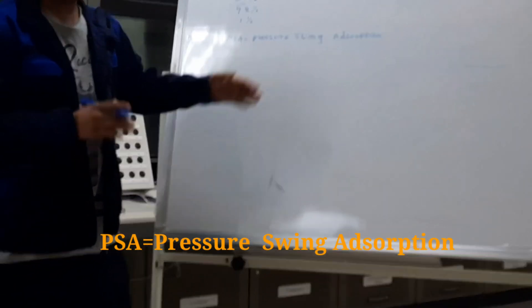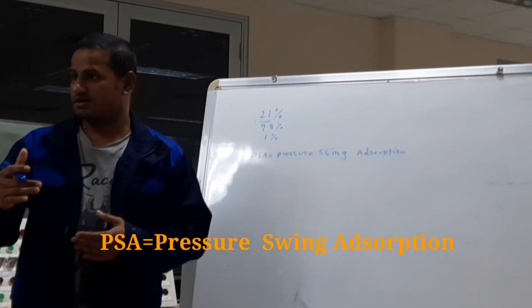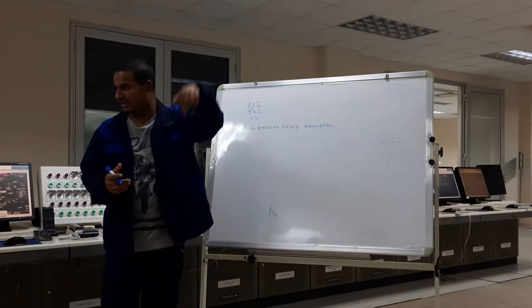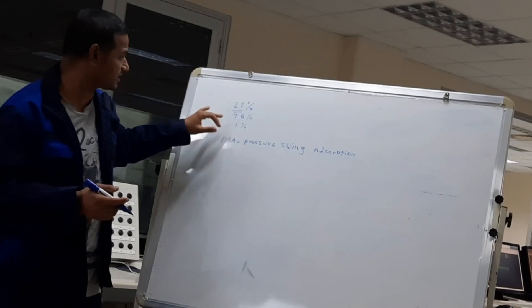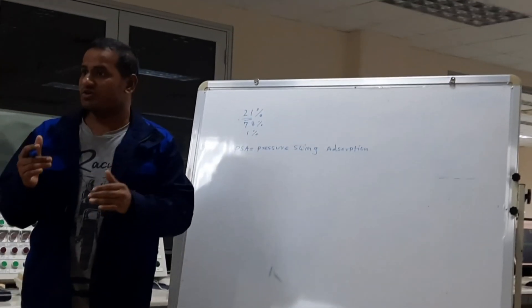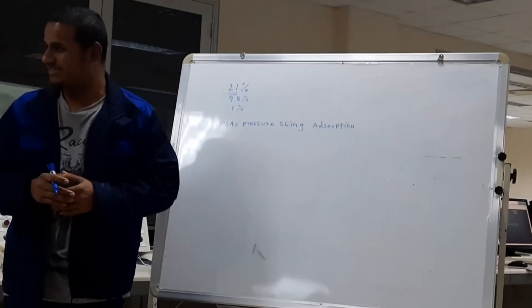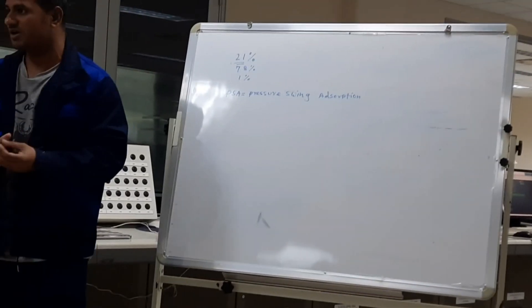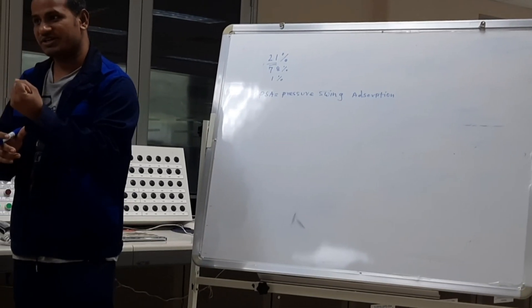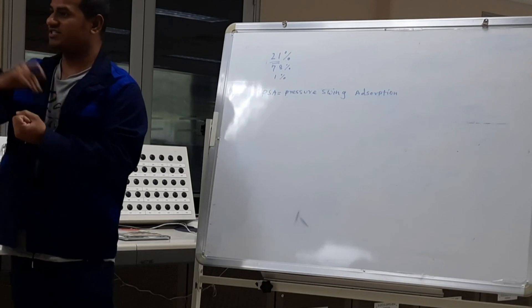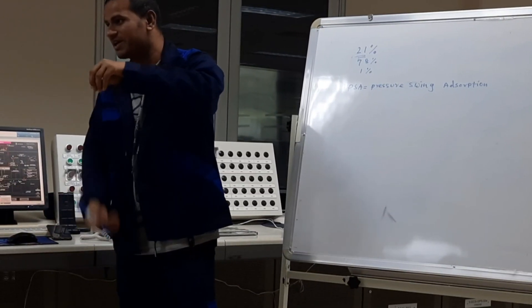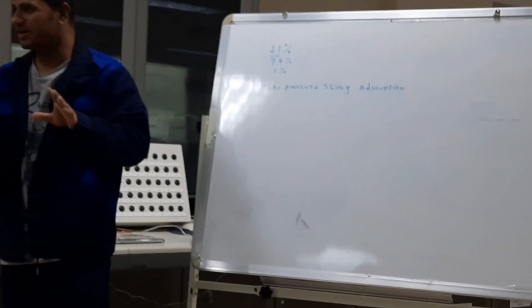Pressure Swing Adsorption works by producing oxygen at high pressure — around 5 to 9 kg pressure. 'Swing' means pressure increases one time, then decreases. In air, we normally have 21% oxygen and 78% nitrogen. We require only oxygen, so the nitrogen needs to be released. For releasing the nitrogen in the PSA unit, we use zeolite molecular sieve. The main function of the zeolite molecular sieve is to adsorb the nitrogen. The zeolite molecular sieve absorbs all nitrogen and lets oxygen pass. When pressure reduces, all nitrogen is released into the atmosphere. By this system, we produce oxygen.